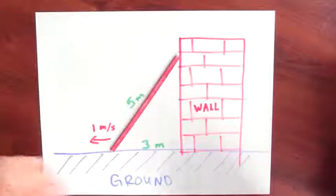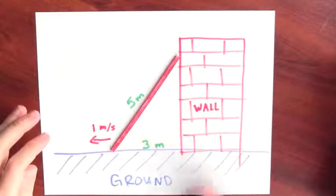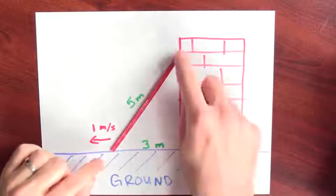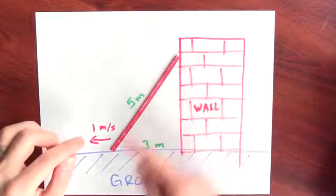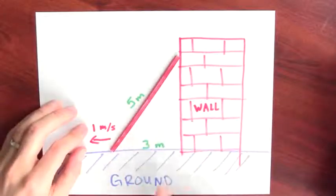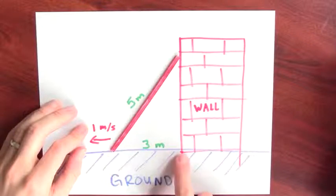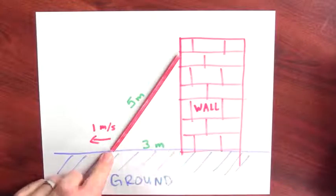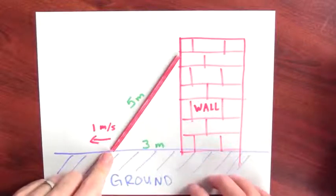A classic related rates problem involves a ladder leaning up against the side of a building. Well, here's the setup. I've got a wall and the ground. I've got a ladder resting on one side on the ground, the other side against the wall. The ladder's five meters long and the bottom of the ladder is three meters from the base of the wall. I'm going to start pulling the bottom of the ladder away at a speed of one meter per second.